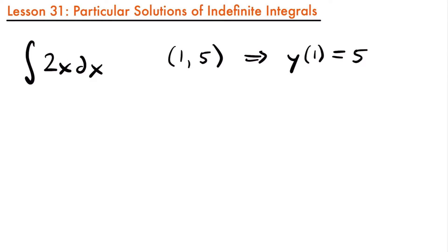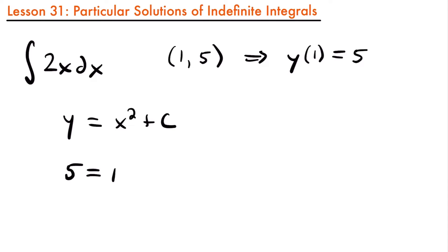Remember what we said about this integral — the answer was equal to x squared plus c. This would be our function y, the function whose derivative is inside this integral. We want this function to pass through the point (1, 5), where when it's evaluated at 1, it's equal to 5. So if we plug 1 into this function and set it equal to 5, we would be able to solve for this value of c. We'll have that 5 is equal to 1 squared plus c, and so 5 equals 1 plus c, meaning c is equal to 4.